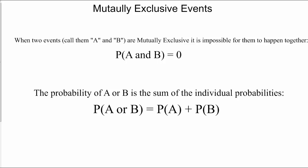Now we talk about mutually exclusive events. When two events are mutually exclusive, it's impossible for them to happen together, so the probability of A and B occurring at the same time is zero. The probability of A or B happening is just the sum of those two probabilities. The word 'or' indicates adding probabilities, while 'and' indicates multiplying probabilities together.